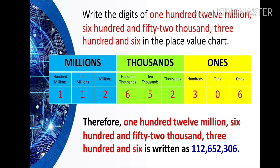We put three, zero, and six in the ones group; six, five, and two in the thousands group; and one, one, two in the millions group. Therefore, 112,652,306 is written as shown.